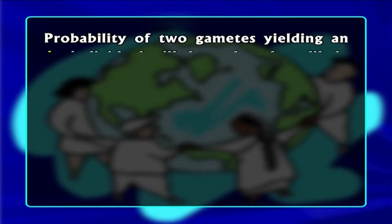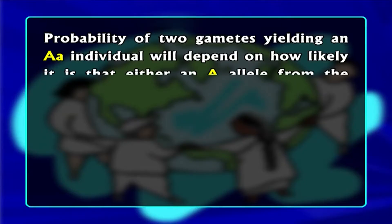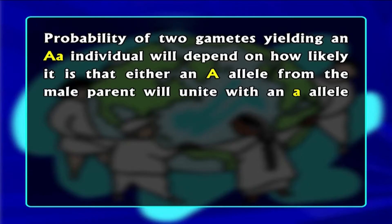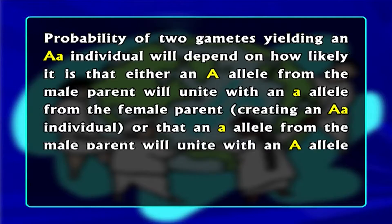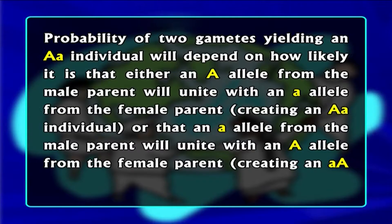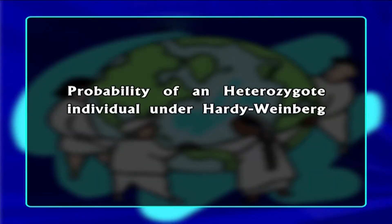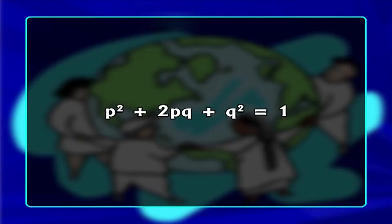Finally, the probability of two gametes yielding a capital A small a individual will depend on how likely it is that a capital A allele from the male parent will unite with a small a allele from the female parent, or that a small a allele from the male parent will unite with a capital A allele from the female parent. Since there are two possible ways that a heterozygote individual can be created, the probability of this occurring under Hardy-Weinberg equilibrium conditions is 2pq. So the genotype frequencies in a population in Hardy-Weinberg equilibrium can therefore be expressed as p² + 2pq + q² = 1.